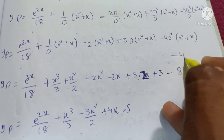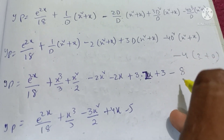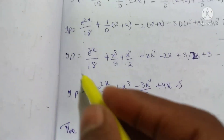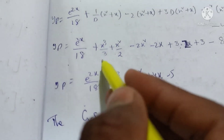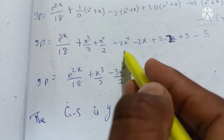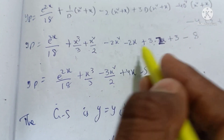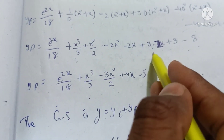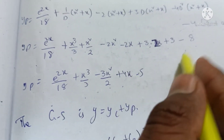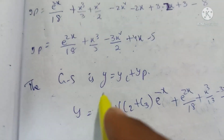Combining all terms: x³/3 + x²/2 - 2x² - 2x + 6x - 8 = x³/3 + x²/2 - 2x² + 4x - 8. Simplifying: x³/3 - (3/2)x² + 4x - 8, giving the complete particular integral yp.